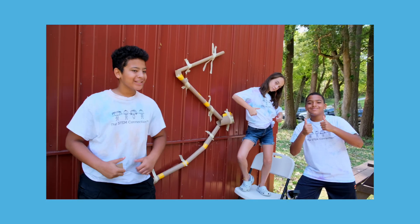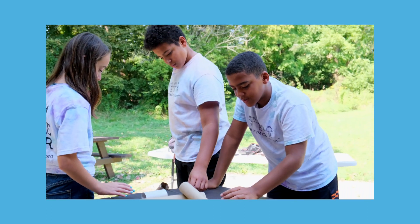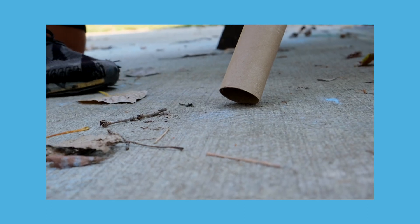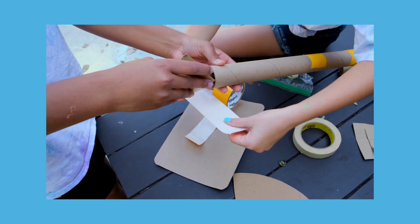When the STEM kids created their ball run using cardboard, they were being innovators. An innovator is someone who creates new ideas or ways of doing things. One way innovation can happen is when we find new uses for items and materials, just like they used cardboard to make their ball run.